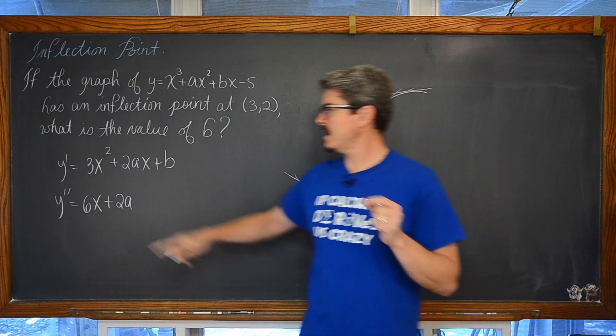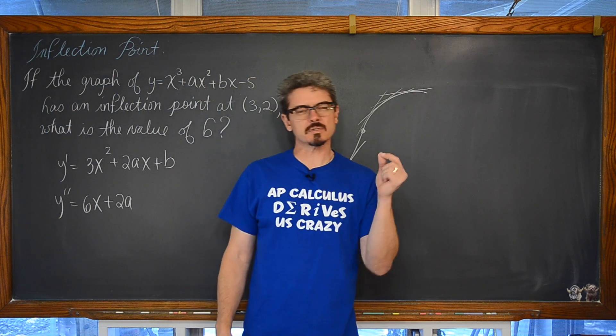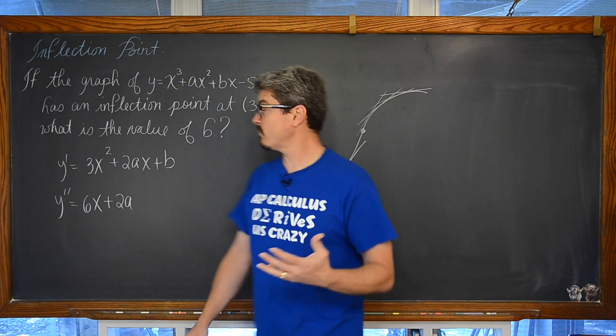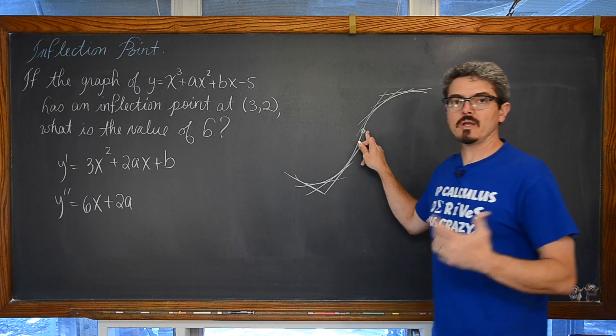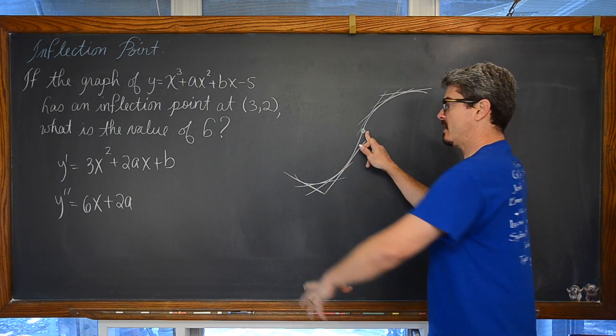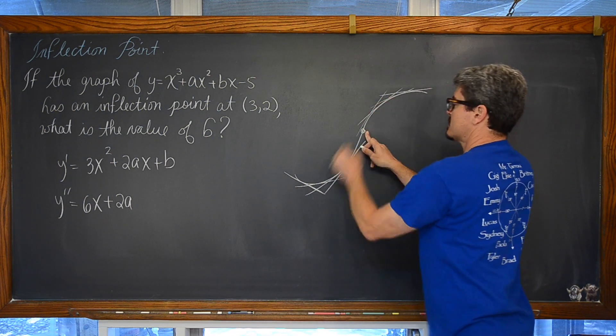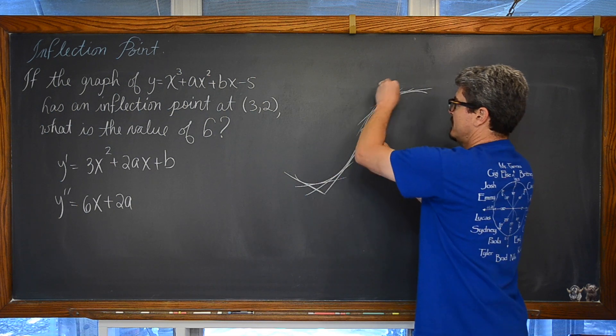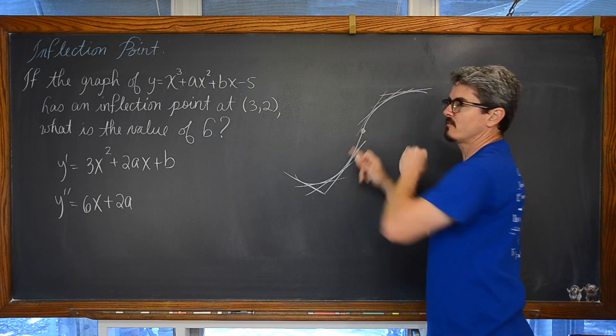And the second derivative being equal to zero isn't enough to validate that a point is an inflection point. The second derivative f double prime has to actually change sign, in this case it would be changing from being positive to negative for f double prime.